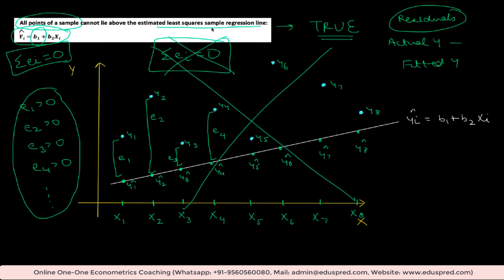So the statement is true: all the points of a sample cannot lie above the estimated least squares sample regression line. In fact, we can also change 'above' to 'below' — reversing the situation so all actual data points are below the fitted values. But even that is not possible, because then all residuals would be negative, and the sum of those residuals would also be negative, meaning the sum could never equal zero, which contradicts the OLS property.